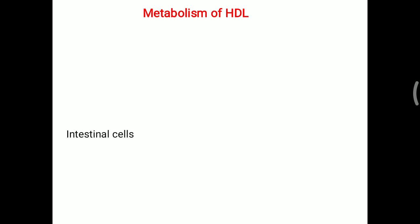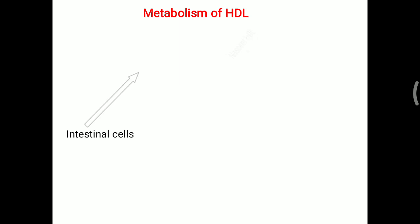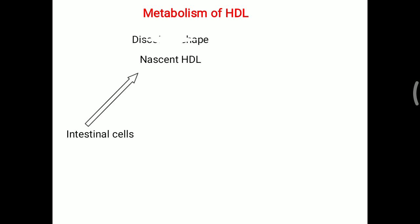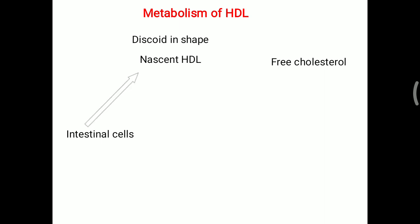HDL is not produced by the liver — it is produced by the intestinal cell. Whatever HDL is produced from this intestinal cell is called nascent HDL, or newly synthesized HDL. This newly synthesized HDL is initially discoid in shape. The basic function of this nascent HDL is to take up free cholesterol from the peripheral tissue.